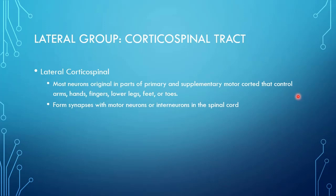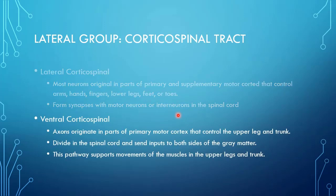Connections with interneurons are important for voluntary control over movements — inhibiting pain responses is one example. The ventral corticospinal tract controls the upper leg and trunk, tending toward more central or axial movements. If you look at the pathways, you'll see this tract divides at the spinal cord and sends inputs to both sides, which is important for midline movements — hitting both sides of the body simultaneously.